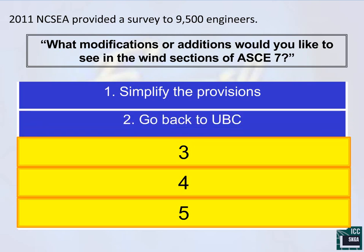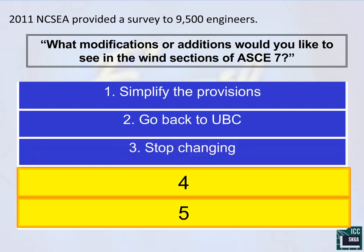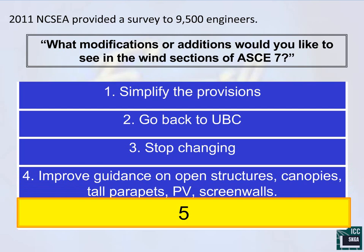The next most common response was to go back to UBC — I will make no promises there. The third most common request was to stop changing — also not the subject of our talk today. The fourth item is what we are going to focus on. A large number of practicing engineers responded to this survey with a request for more guidance on a whole variety of things — for example, open structures, canopies, tall parapets, solar PV, and screen walls. These are the non-building structures that we don't get to choose whether or not they're on our buildings — they often are incorporated in our buildings. While the building code does a great job of telling us how to design our building proper, it doesn't always explain what to do with these other structures. This is going to be the focus of our talk today.